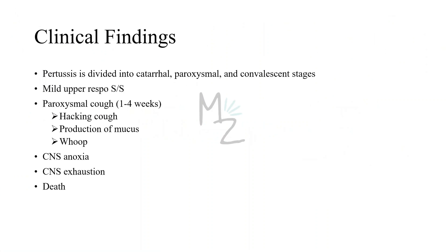Clinical findings: Pertussis is divided into three stages — catarrhal, paroxysmal, and convalescent. Whooping cough is an acute tracheobronchitis that begins with mild upper respiratory tract symptoms, followed by severe paroxysmal cough lasting one to four weeks. The paroxysmal pattern is characterized by a series of hacking coughs with production of copious mucus, ending with an inspiratory whoop as air rushes past the narrowed glottis. Central nervous system anoxia and exhaustion can occur as a result of severe coughing. Death is mainly due to pneumonia.